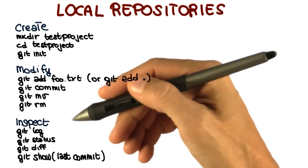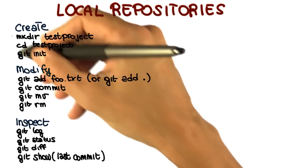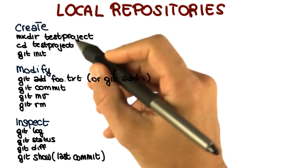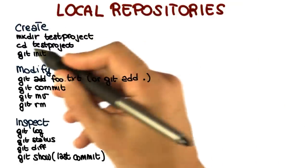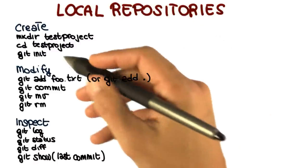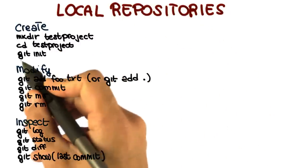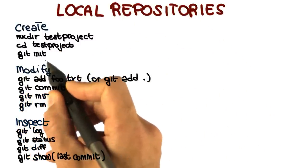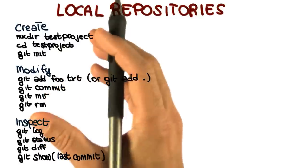The first one is commands to create a repository. And notice that not all of these are git commands. For example, to create a repository, we normally want to create a directory, which is exactly what we did in our demo. We want to go to that directory and then execute the git init statement, which initializes that directory as a git repository.